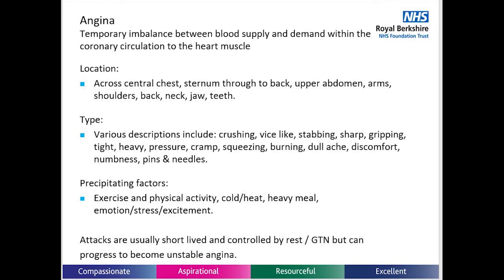Angina is a temporary imbalance between the blood supply and the demand within the coronary circulation. Every patient's symptoms will be slightly different. Location of the pain could be across the chest, central chest, arms, throat or neck, jaw, teeth, through to the back or the upper abdomen. The type of pain can be described as crushing, vice-like, stabbing, achy, heavy, burning, or a discomfort.